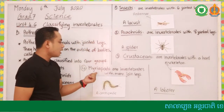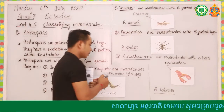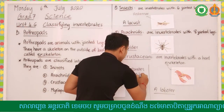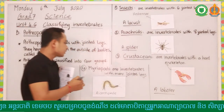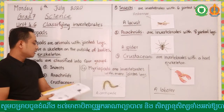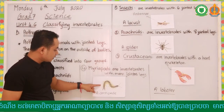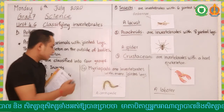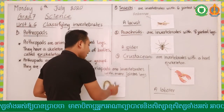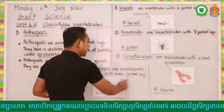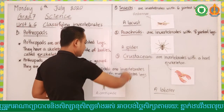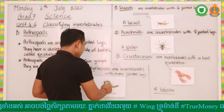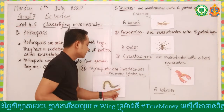Myriapods are invertebrates with many jointed legs. Look at the picture - there are so many legs. Myriapods also have an exoskeleton and a pair of antennae. Note that a spider has no antennae, but lobsters, locusts, and centipedes all have a pair of antennae.